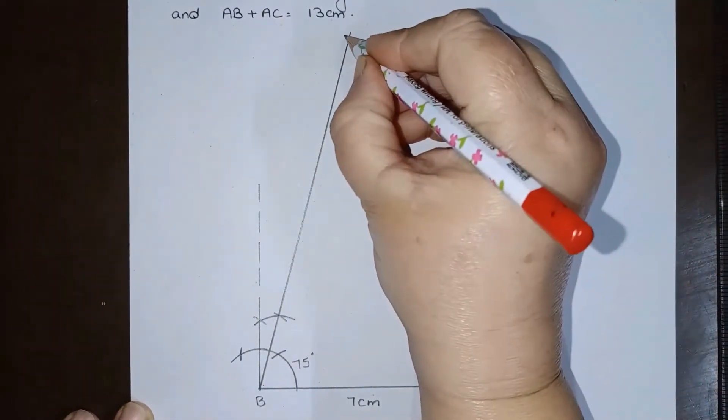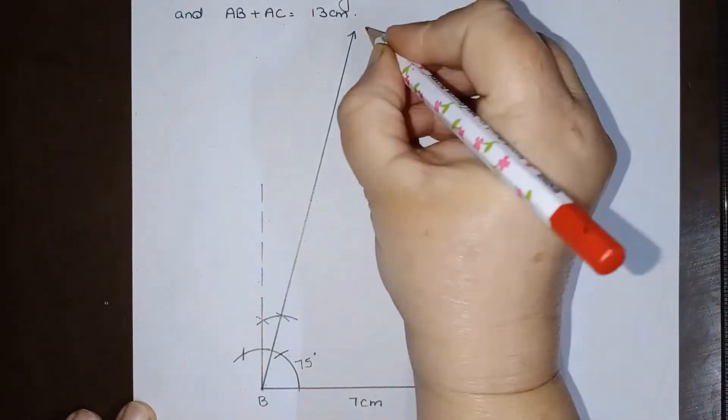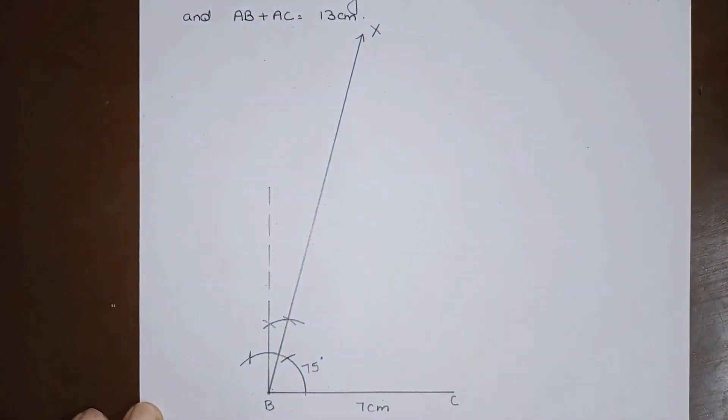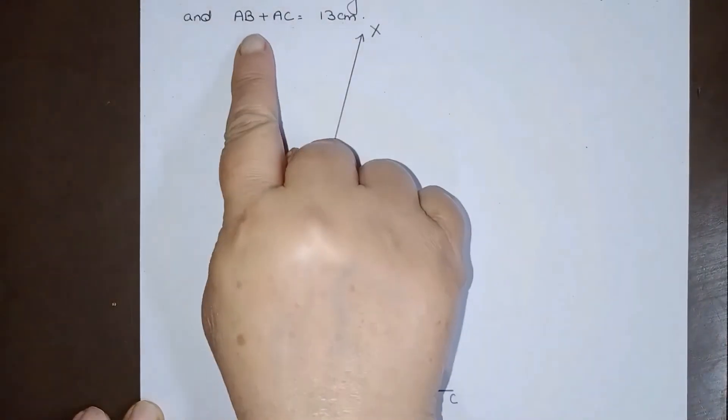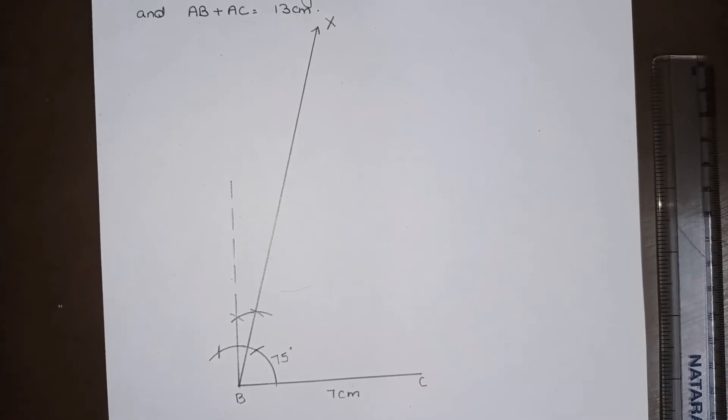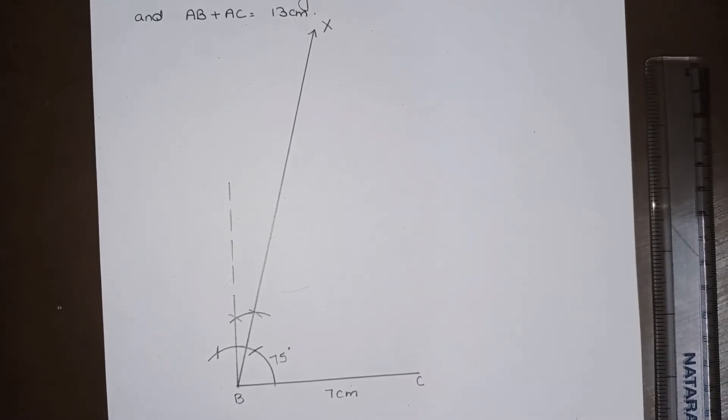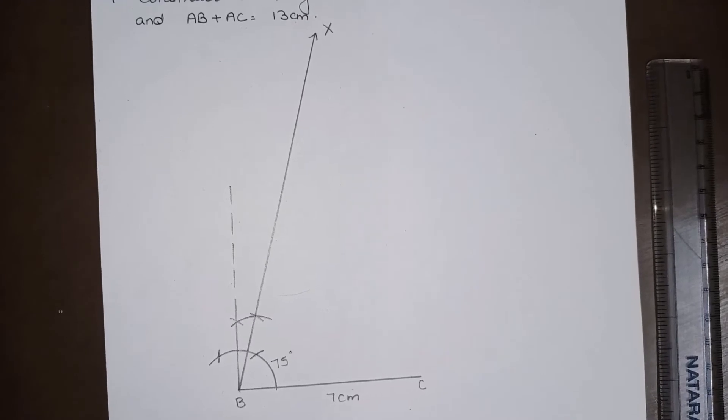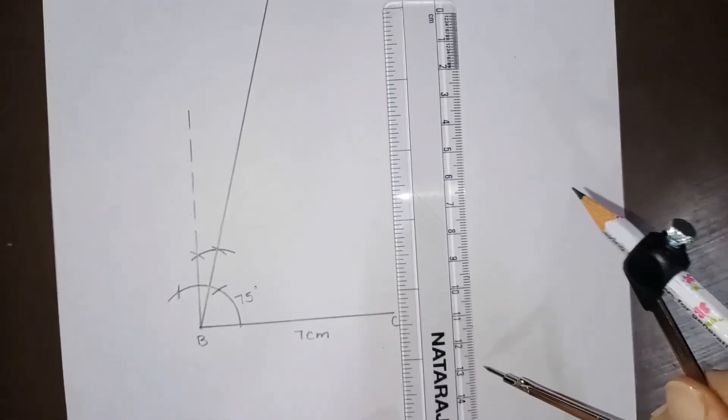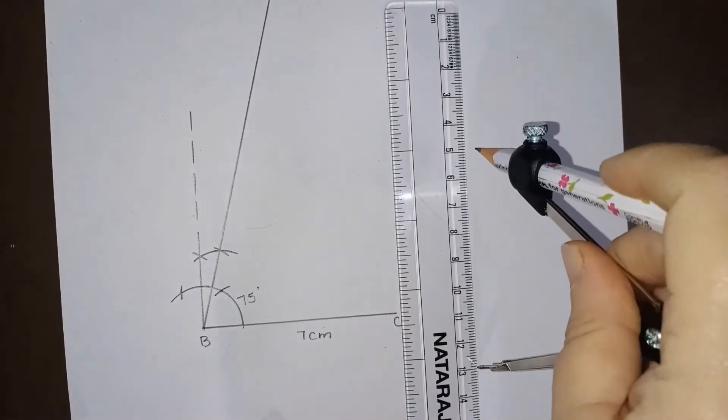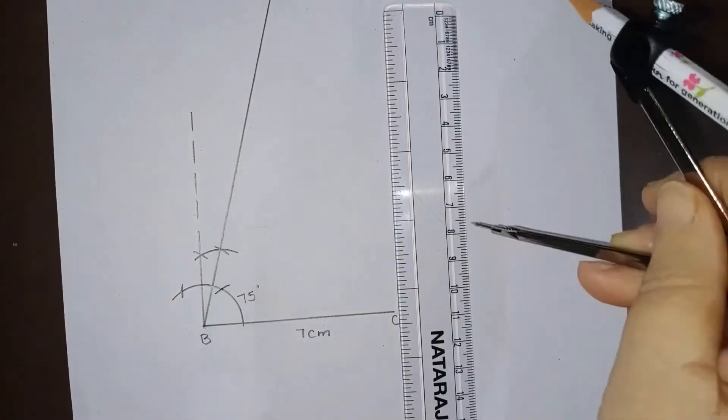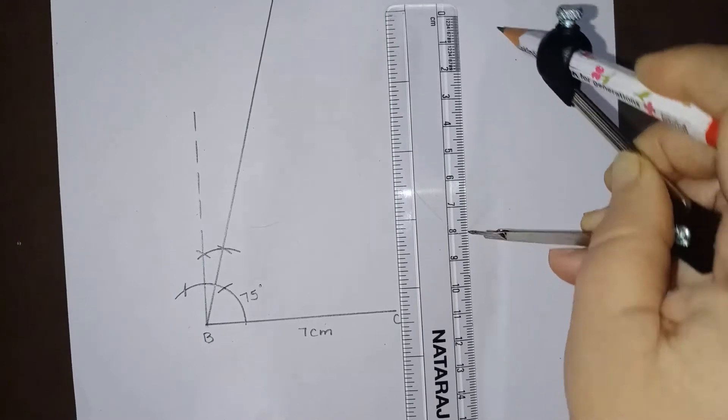Now what we will do, I can take this ray as BX. So I have drawn angle XBC equal to 75 degrees. Now I will see this AB plus AC is given to be 13 cm. So from ray BX I have to take 13 cm. Now for that, if I will open this compass 13 cm, it is not possible. So what I can do, I can first take it 8 cm.